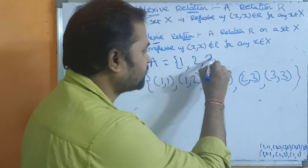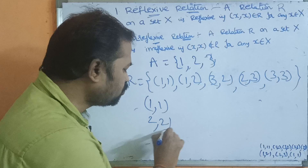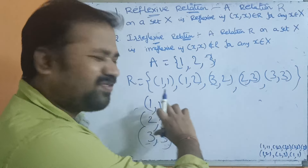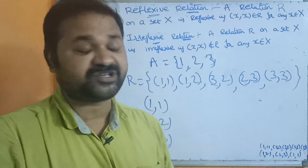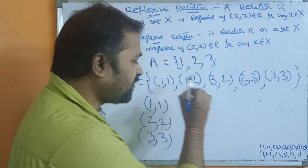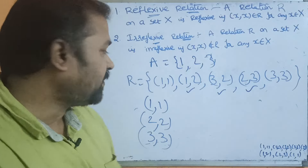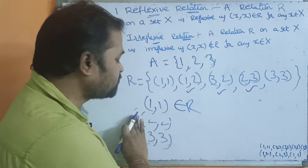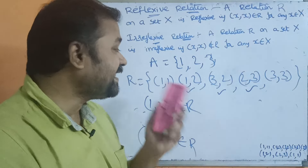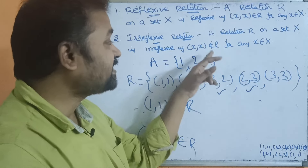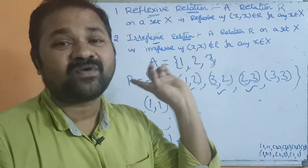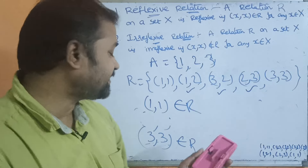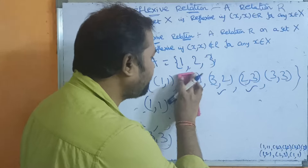For irreflexive relation, the elements of the set are 1, 2, 3, so (1,1), (2,2), and (3,3) should NOT be present in the relation. Looking at the example relation containing (1,1), (1,2), (3,2), (2,3), and (3,3): (1,1) is present and (3,3) is present. Since these pairs exist in R, this is not an irreflexive relation.